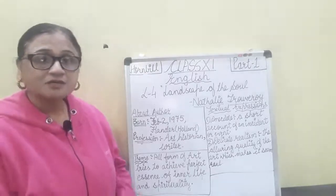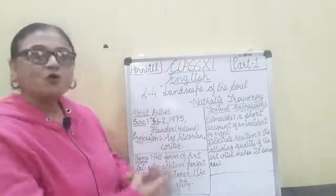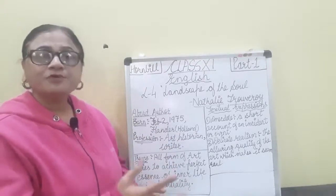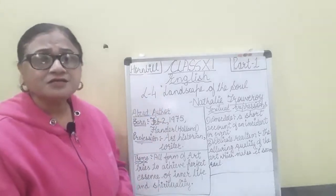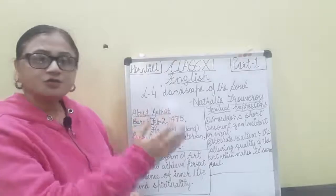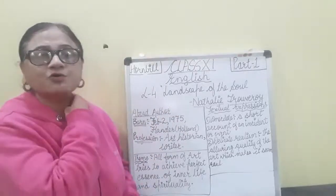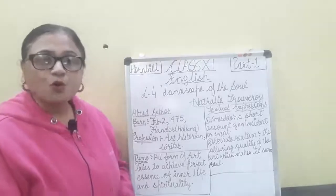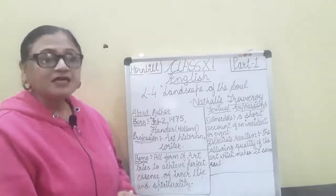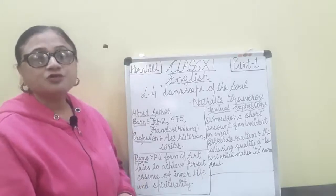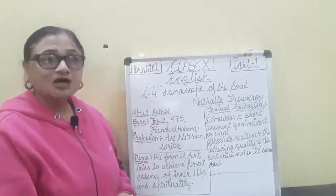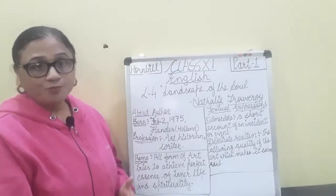The author, Nathalie Troveroy, was born on February 2nd, 1975, in Flanders, Holland. She is very much alive. By profession, she is an art historian, and because of her love for art, she started writing books on different art forms as well as on old architectures. It has even been heard that she may write on the old architecture of Delhi — Chandni Chowk and Jama Masjid.